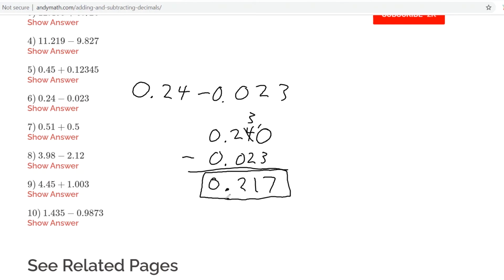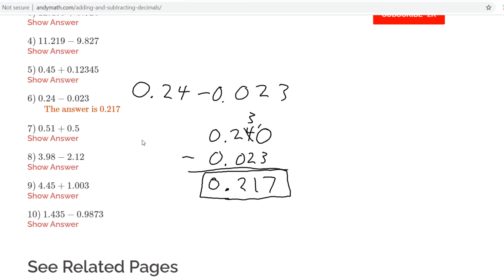So the answer to this one, number six, should be 0.217 or two hundred seventeen thousandths. We can check it. 0.217 is the answer.